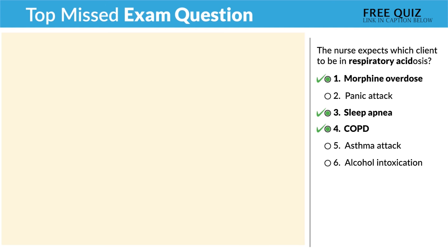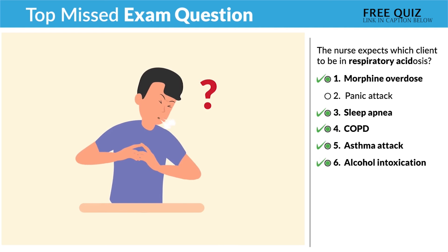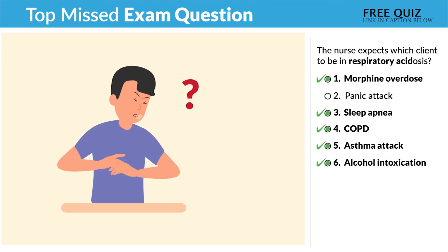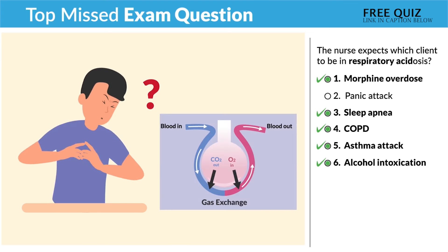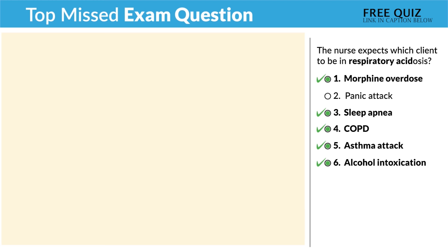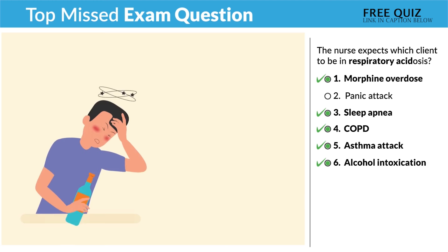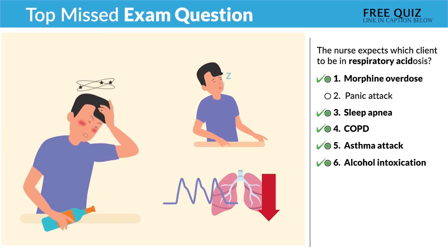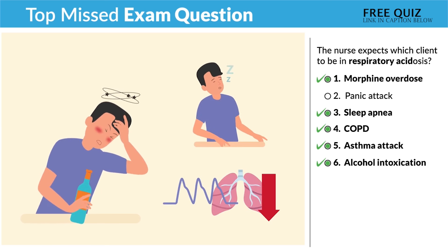Options five and six are also correct. An asthma attack — can they breathe? No. Is that good gas exchange? No. So we have low and slow airflow, putting us into acidosis. Option six is an easier one: alcohol intoxication. Alcohol is a depressant, making the respiratory rate low and slow.